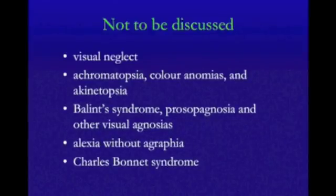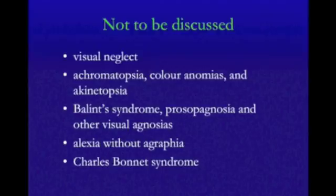We're going to go from the retina back to V1, the occipital cortex, up to the dorsal extra-striate regions, and then forward again into the lateral geniculate nucleus. I'm not going to talk about neglect, achromatopsia, or chalinomias, or Balint syndrome — even though they're fascinating — because these are rare in stroke. Alexia without agraphia, whilst stroke is its commonest cause, we don't often see either.